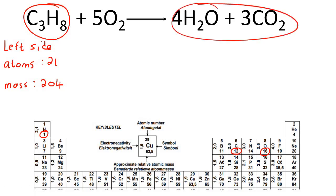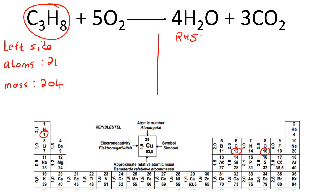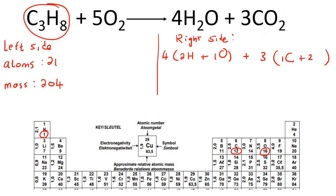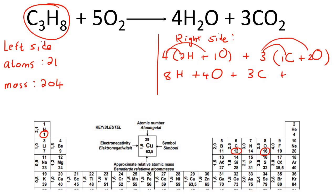Now we're going to go and do the exact same thing on the right hand side. So this four in the front — you can just do it like a bracket. Now inside that bracket, you've got two hydrogens plus one oxygen. Then you're going to say plus three, because this three is for all of them. Inside here, there is one carbon and two oxygens. So if we had to multiply those numbers in, you're going to get eight hydrogens and four oxygens, and then three carbons and six oxygens. And so if you put everything together, four oxygens plus six oxygens is going to be 10 oxygens, eight hydrogens, and three carbons.